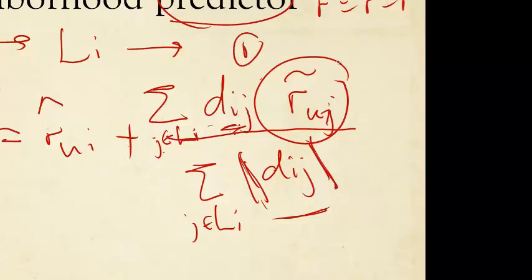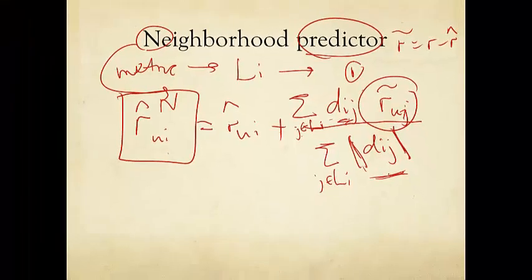Now you can make it even simpler by just making the weights 1. You simply just count, add up the R tildes and divide it by the size of the neighborhood. That's it. That turns out not to be performing very well. So we use a slightly more involved weights here.